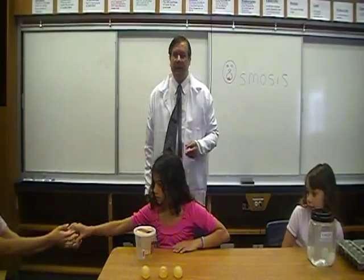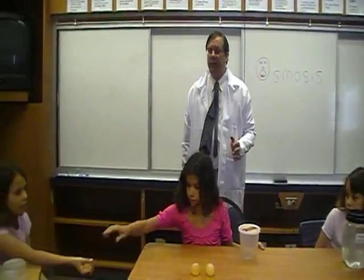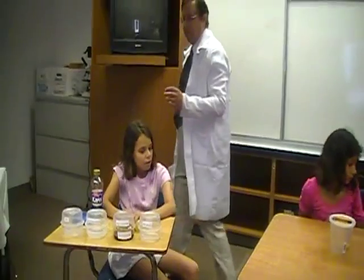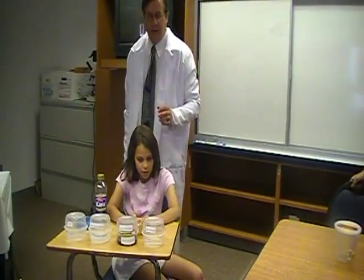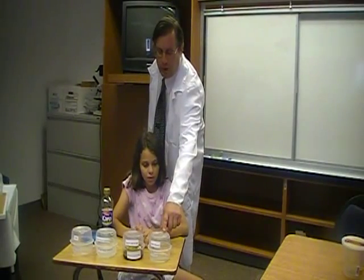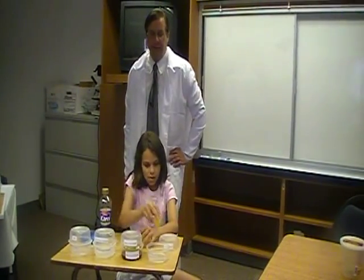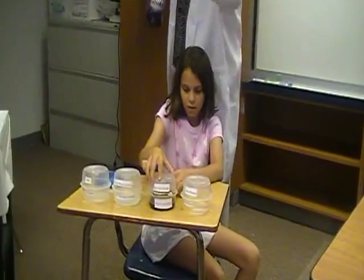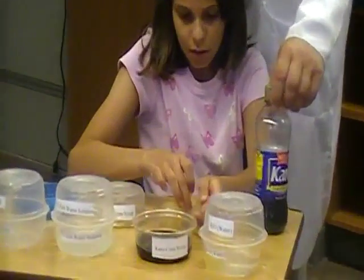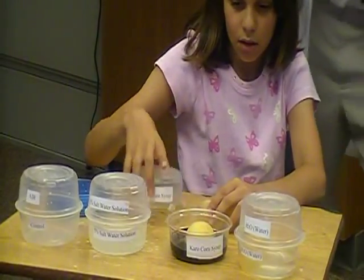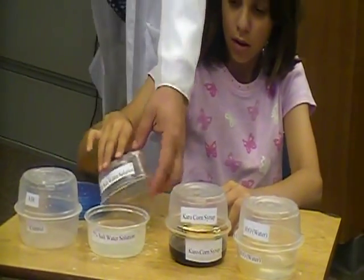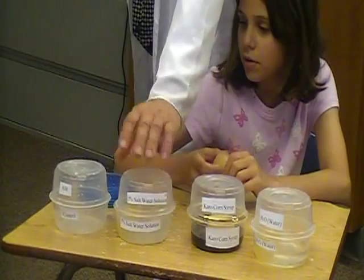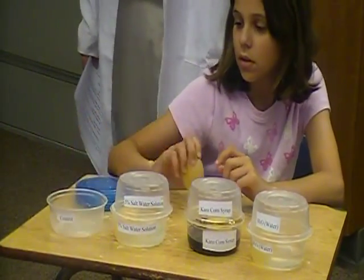For the next step in this video lab on osmosis, we're going to take these four eggs and put them into four different jars containing four different solutions — or at least three different solutions, since one of them isn't actually a solution. The first jar contains water, H2O. Julia, can you put the first egg into that? The second container contains Karo corn syrup, which you can buy at any store. The next container is a 5% salt solution. And the fourth container contains nothing but air — we're going to use this egg as our control group egg to measure how much these eggs are going to change or not change.